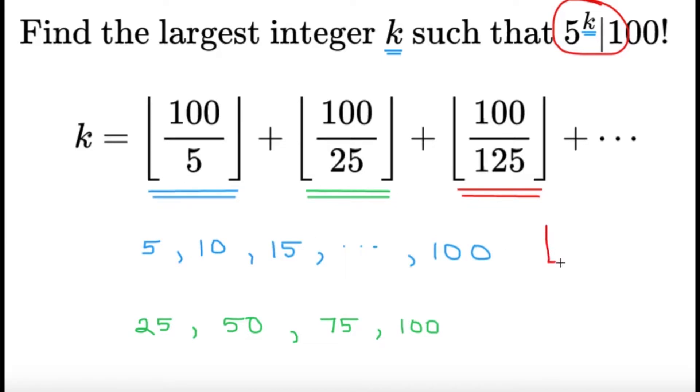Now, this symbol over here, this means the greatest integer function. So, some people also call it floor of x. It's the greatest integer less than or equal to x. Now, it's going to be this infinite sum, the floor of 100 over the powers of 5. So, 100 over 5 plus the floor of 100 over 25 plus the floor of 100 over 125 and so on.